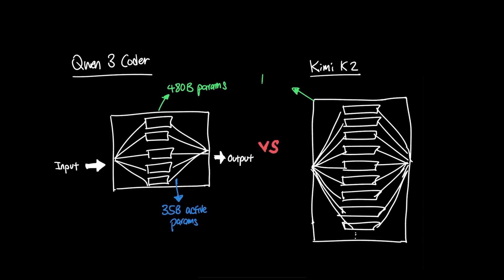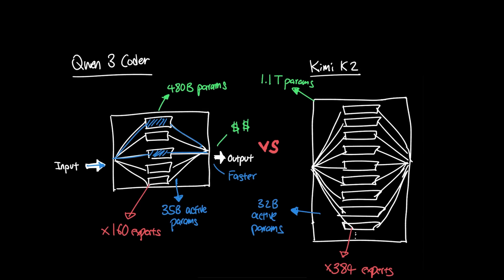In comparison, KimiK2 has 1 trillion parameters in total size with 32 active parameters and has 384 experts, while Quen3 Coder has 160 experts. Architectures like Moe makes inference way faster and more affordable compared to dense models that typically use the entire model.